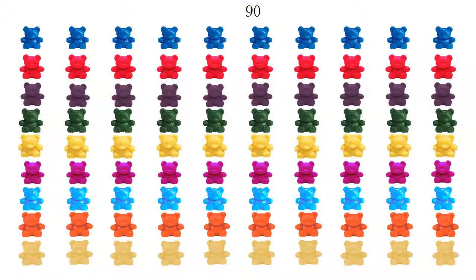There are 9 lines of 10 counting bears. 9 groups of 10 make 90. This is the number 90.